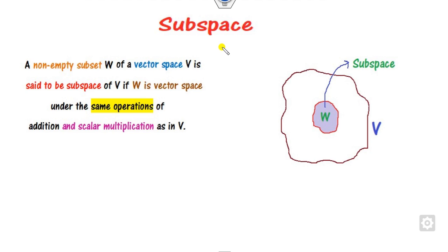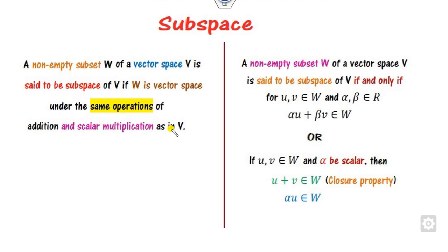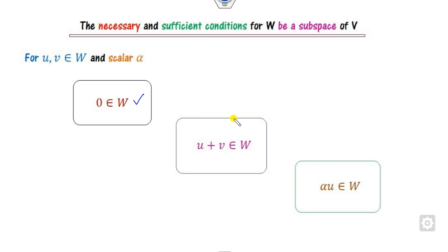What we have seen in our last class is the definition of the subspace. If you consider a non-empty subset W of V, then W is said to be a subspace if it forms a vector space under the same operations as that of V. In other words, a non-empty subset W is a subspace if and only if the closure property with respect to addition and scalar multiplication is satisfied. Once these properties — non-empty and closure — are satisfied, these three properties are called the necessary and sufficient conditions.